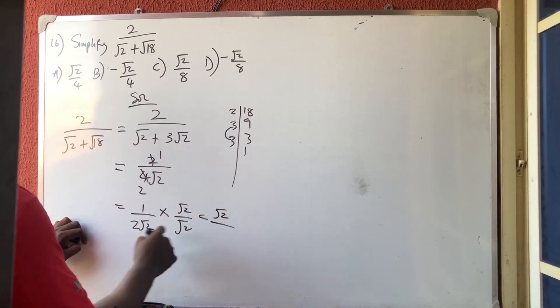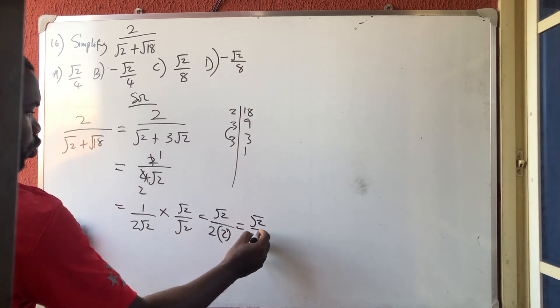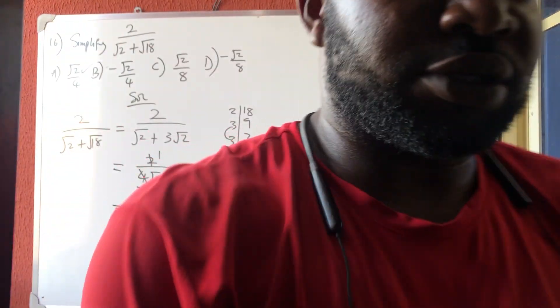This times root 2 all over 2 times 2, bracket root 2 times root 2 is 2 again. So I'm left with root 2 over 4. Thank you very much, please subscribe.